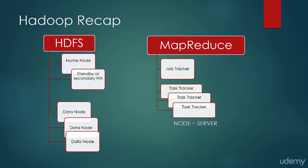Data is stored in Data Nodes and the Name Node manages metadata. Metadata is data about data — for example, if we have a file in HDFS, the name of the file and permissions on the file are considered metadata. Whenever a file is moved into HDFS, it is divided into blocks and the blocks are replicated across Data Nodes based on a replication factor. The default replication factor is 3. Whenever a client tries to read data, the Name Node provides information about the blocks and the client reads the data from Data Nodes.